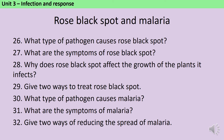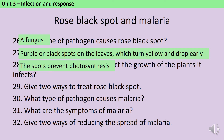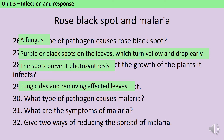Rose black spot is caused by a fungus and the disease causes purple or black spots to appear on the leaves, and then after a little while the whole leaf turns yellow and drops early. This is an issue because both the spots and the dropping of leaves reduces the rate of photosynthesis, so the plant doesn't have enough energy to grow. To treat it you can use a fungicide to kill the fungus, but often a better treatment is just to remove the affected leaves before the fungus can infect anything further.